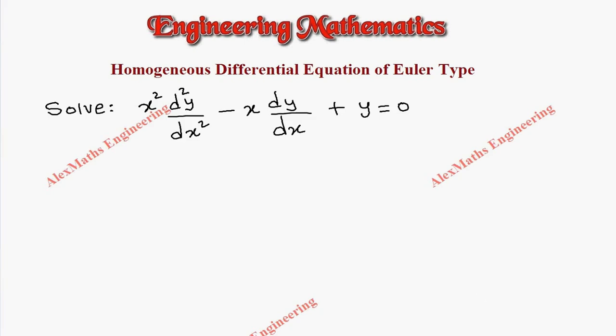Hi students, this is Alex. In this video we are going to solve a problem based on homogeneous differential equation of Euler's type. We have x² d²y/dx² - x dy/dx + y = 0.